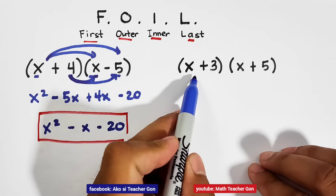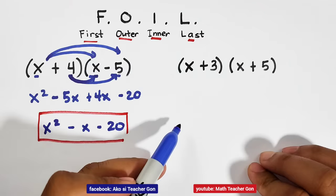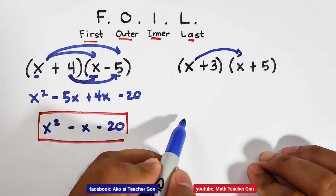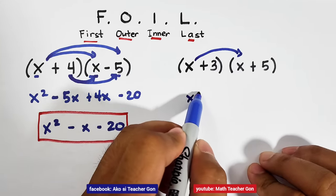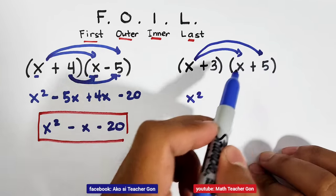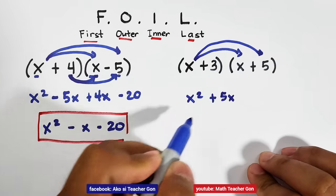Now let us proceed with x plus 3 times x plus 5. Using the FOIL method, the first terms, x times x, we have the x squared. x and 5. x times 5, that is plus 5x.